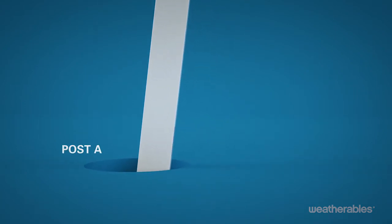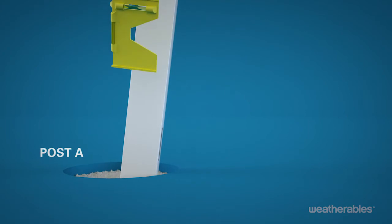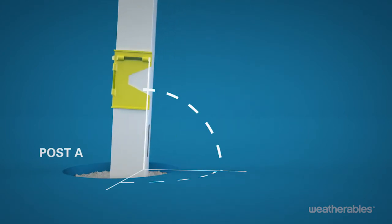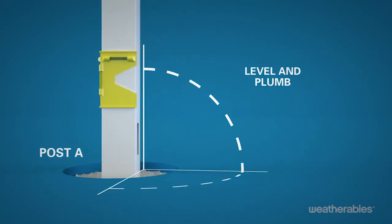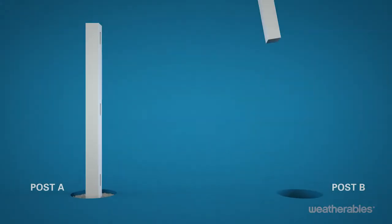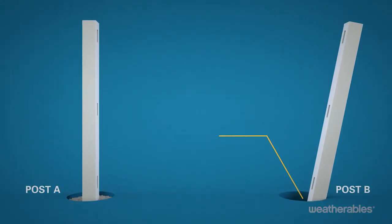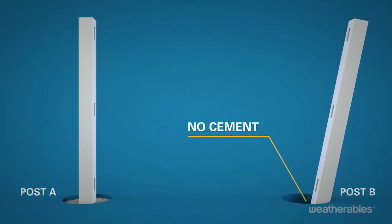Now you can start by installing post A in the first hole with concrete around the post. Be sure to level and plumb the post for proper placement. It's important to have post B sitting in the adjacent hole but not cemented so you can assess alignment.